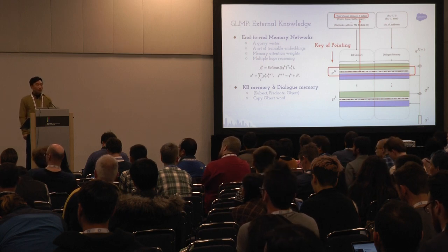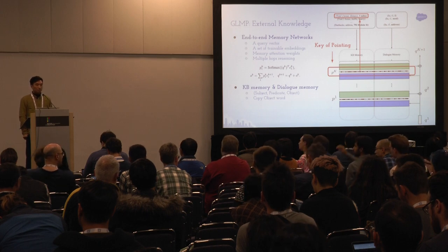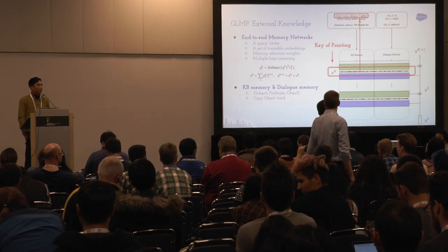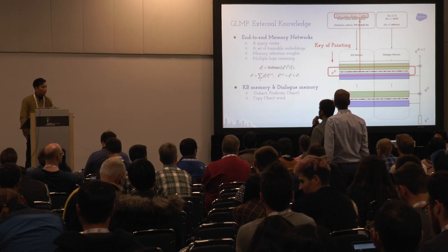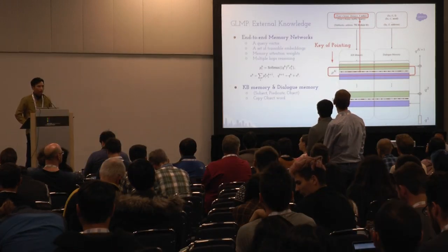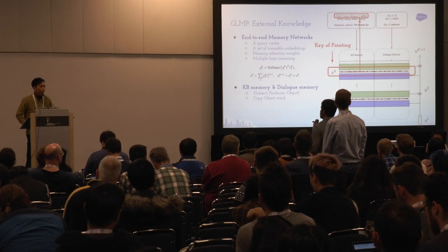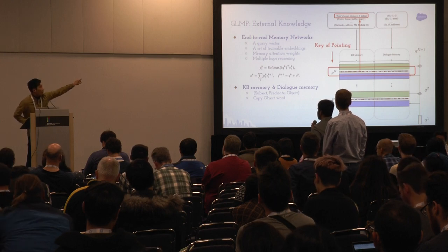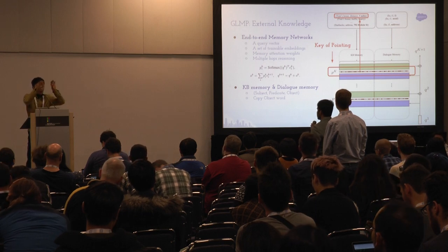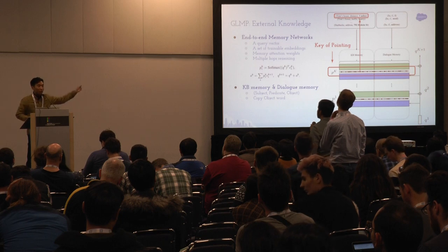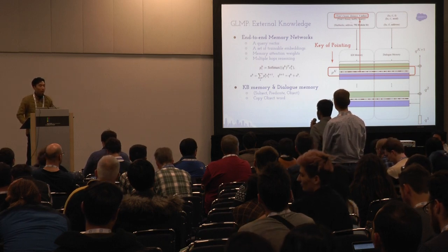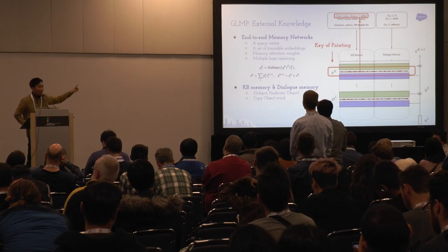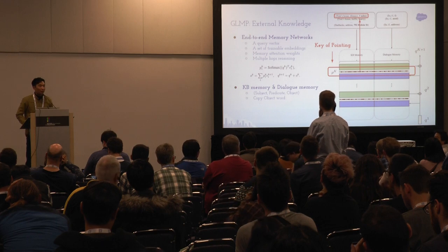One more question: is the type of the KB entity specifically encoded in its representation? For example, 'three miles' is a distance type — do you encode that type explicitly when embedding the node? No, I represent each node by summing individual word embeddings for the subject, predicate, and object. I consider that the 'distance' word vector already carries that type information implicitly. It might help to add explicit type information, but I haven't tried it.